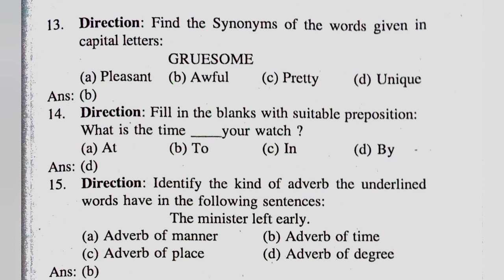And the last question: identify the kind of adverb the underlined word has in the following sentence — 'The minister left early.' The underlined adverb is 'early.' Option A: adverb of manner. Option B: adverb of time. Option C: adverb of place. And option D: adverb of degree. So your correct answer is option B, adverb of time.